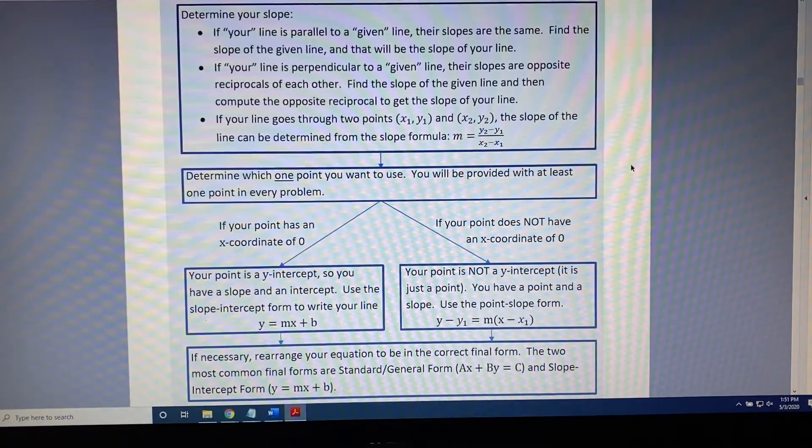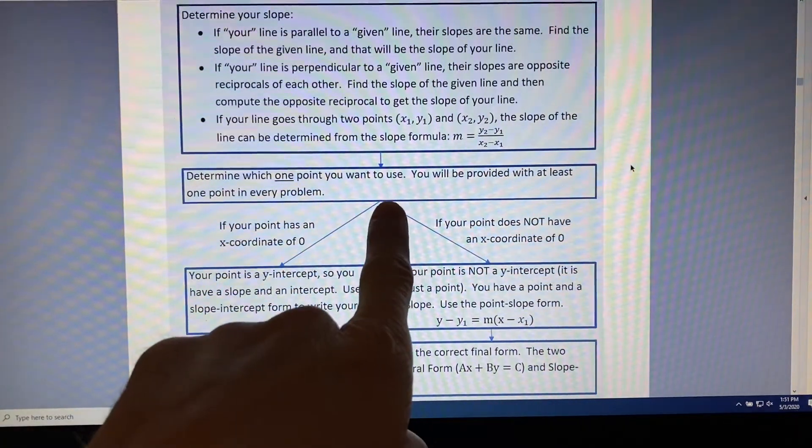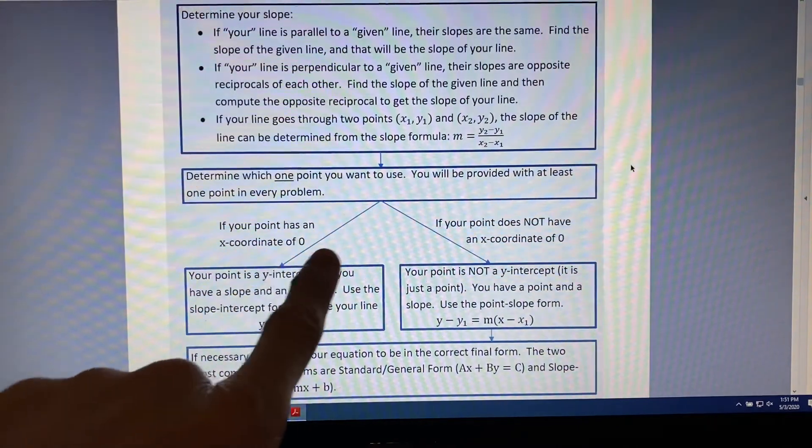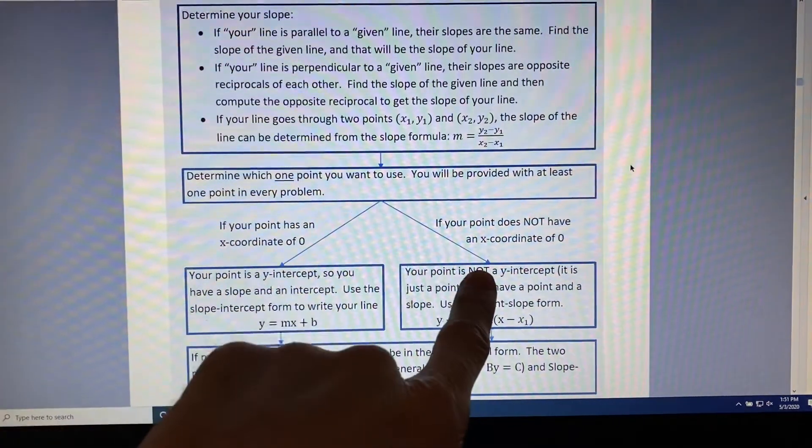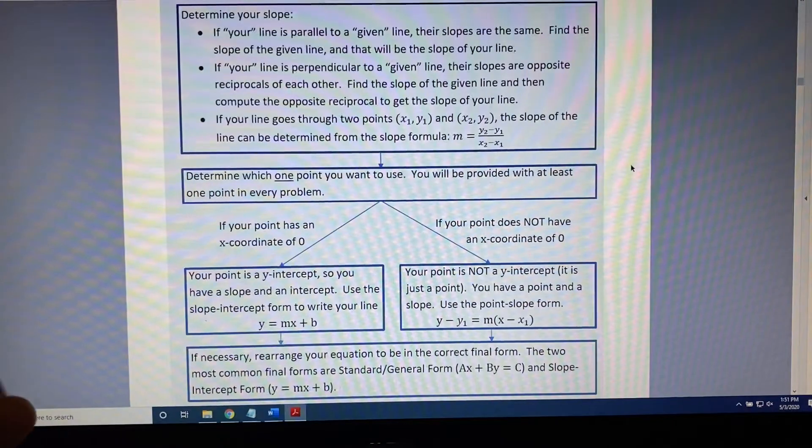We take a look at the selected point, and specifically its x-coordinate. If the x-coordinate is zero, then we take the path to the left. If the x-coordinate is not zero, then we take the path to the right. Let's explore these paths one at a time.